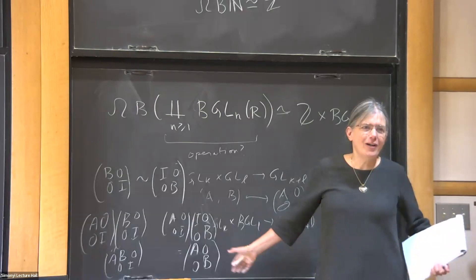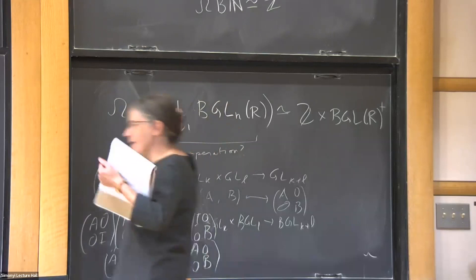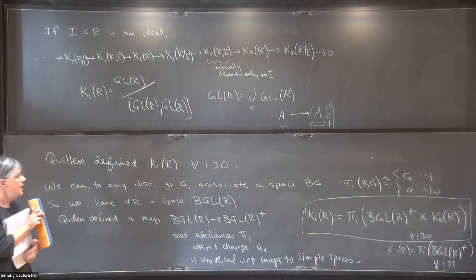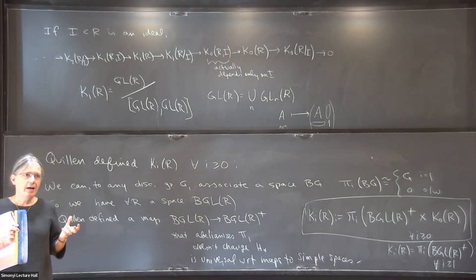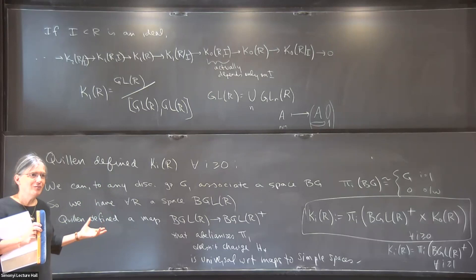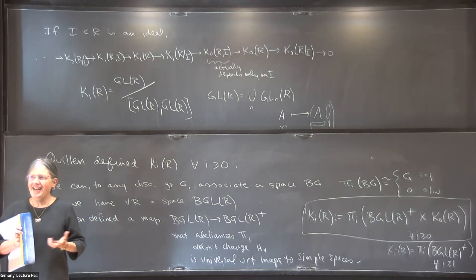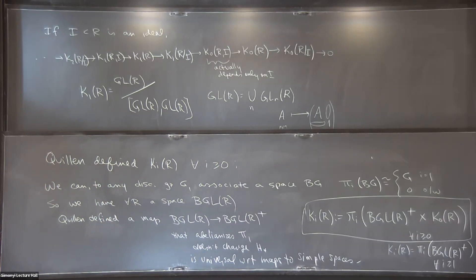So BGL(R)⁺ is a group completion that's also some kind of abelianization of BGL(R). You can construct BGL(R)⁺ in many different ways — also starting from the category of finitely generated projective modules over R. Part of the miracle is that all these different definitions, however different they look, really give you the same thing. The only thing is none of these methods comes with a good algorithm for calculating what you get. That's why it's a hard invariant.